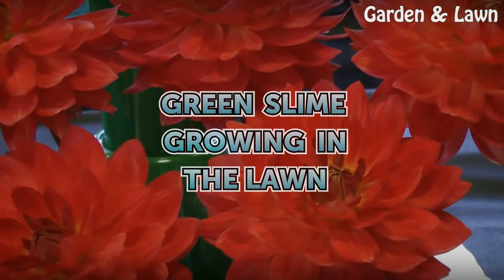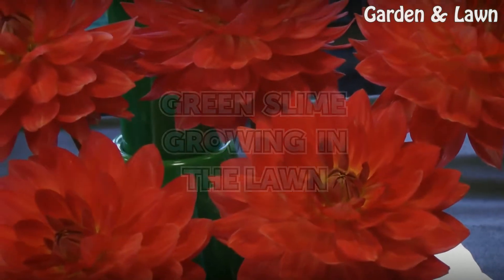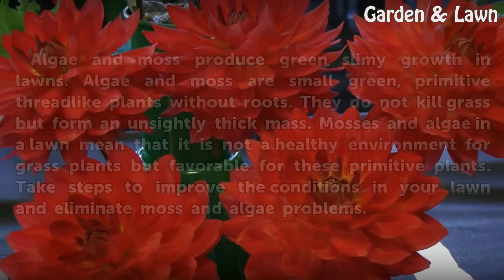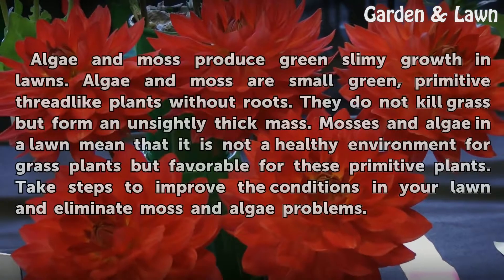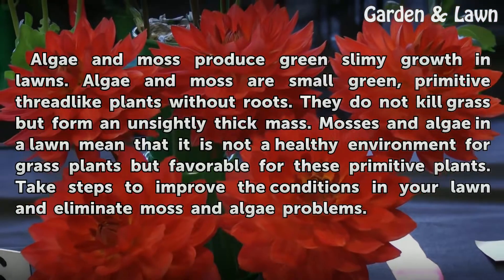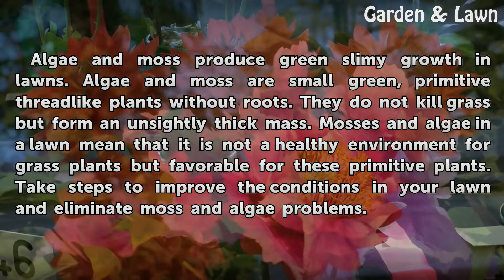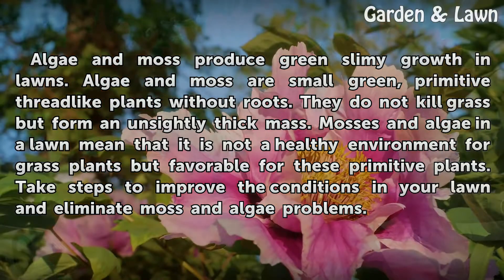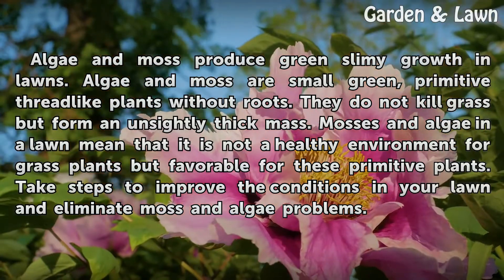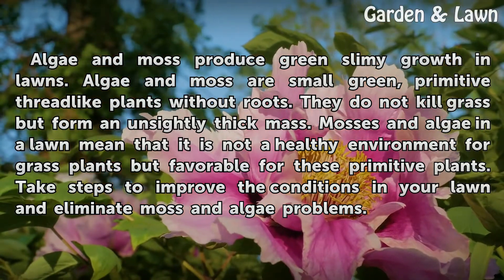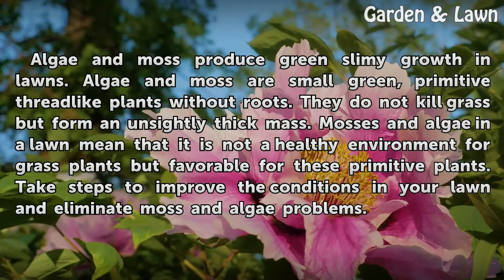Green slime growing in the lawn. Algae and moss produce green slimy growth in lawns. Algae and moss are small green, primitive thread-like plants without roots.